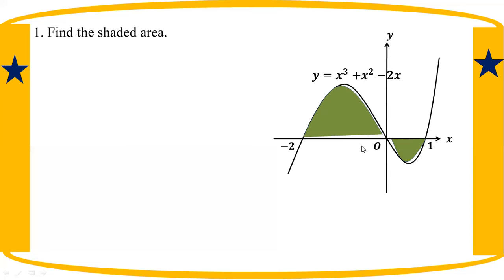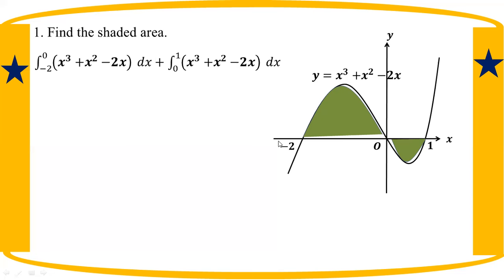If you look at the integral of h² plus a² minus 2h, you can see the limiting of an integral. There is the integral of h² plus a² minus 2h.